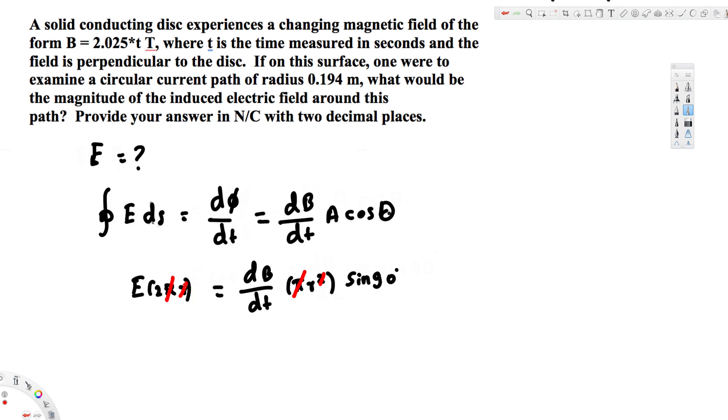We can cancel this π, also this π. We can cancel this r, and that square makes it 1/2. E is equivalent to (dB/dt)r sin 90°. Sin 90° is 1, so we can just leave it.